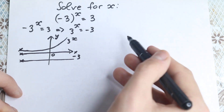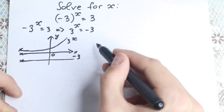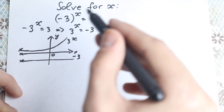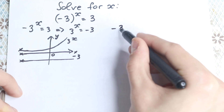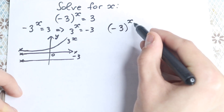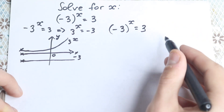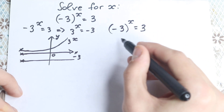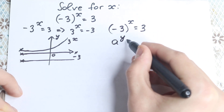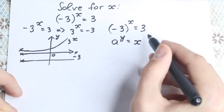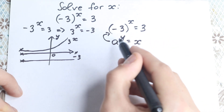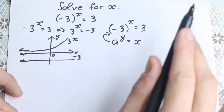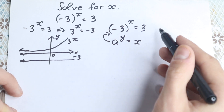But this is the special case when we don't have parentheses. In our actual case we have parentheses: (minus 3) all raised to the power x, equal to 3. This is our case. We know that a to the power y equals x — writing it with variables — so minus 3 to the x equals 3 is our exponential equation.